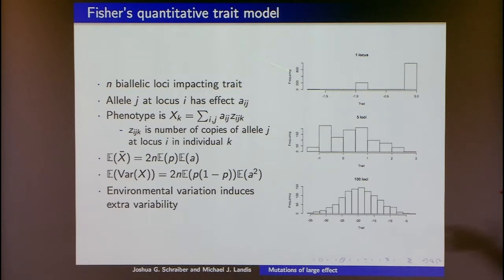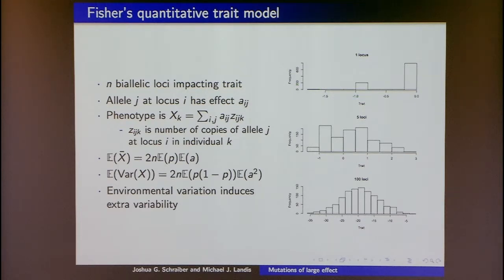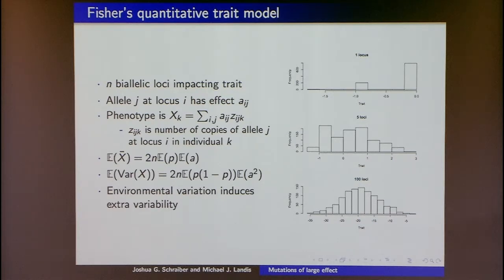As you increase the number of loci involved, you go from having one locus with three genotypes and a very patchy phenotype distribution, to five loci where it starts looking normally distributed, to 100 loci where it ends up normally distributed. In this random model you can calculate the expected mean and expected variance in the population, though it's important to emphasize these are expectations of means and variances.